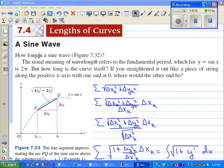How long is a sine wave in figure 7.32? The usual meaning of wavelength refers to the fundamental period, which for y equals sine of x is 2π, but how long is the curve itself? If you straighten it out like a piece of string along the positive x-axis with one end at zero, where would the other end be? Or you could say if you started walking along a sidewalk that was in the shape of the wave of sine, how long would you walk when you're done?